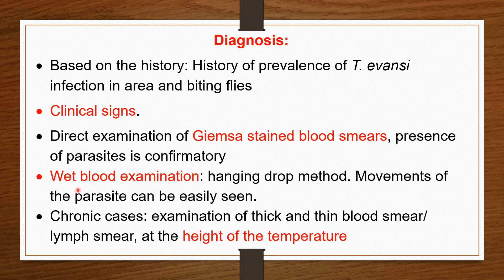Another examination is wet blood examination, or wet mount examination, or hanging drop method examination. In this wet preparation, live trypanosomes are seen and the movements of the parasite can be easily seen — it catches the eye. This is also a confirmatory diagnosis. In chronic cases, examination of thick and thin blood smears is done, because in chronic cases the parasitemia is very less, so it may require a thick blood smear.